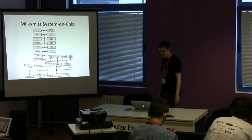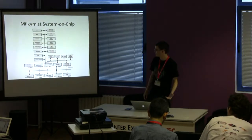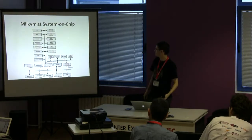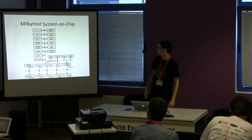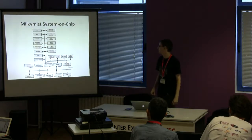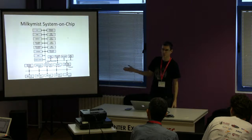ASIC chips cost usually hundreds of thousands of dollars. The PCB, this electronic circuit, is also open source. It contains this FPGA, and on the FPGA it runs the Milky Mist system-on-chip, which is also open source.